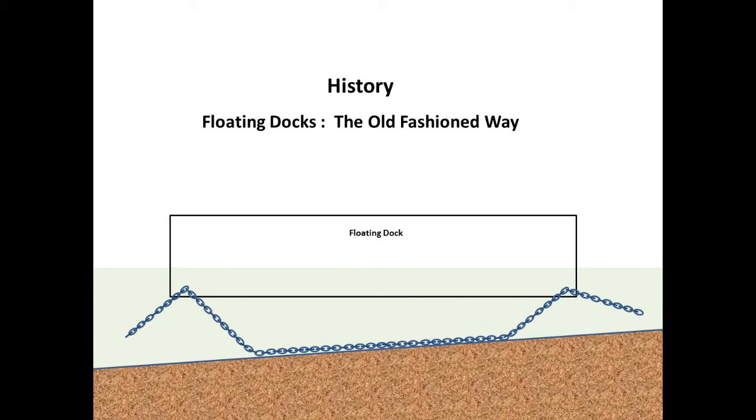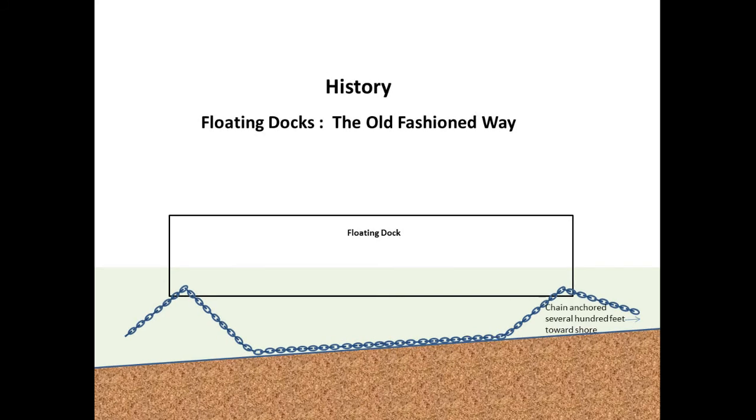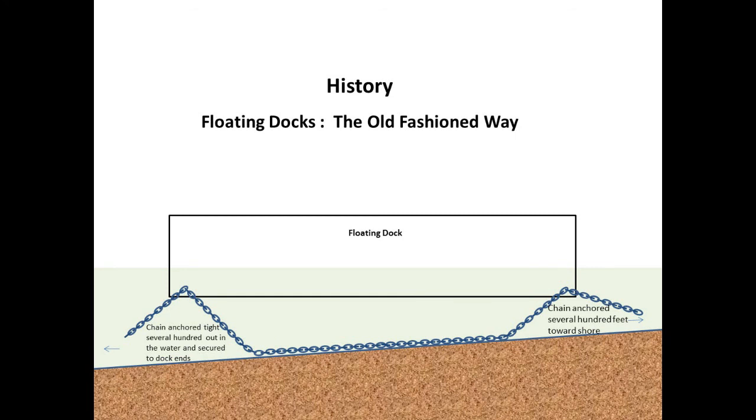Floating docks have typically been secured to a chain several hundred feet long, with one end of the chain anchored on shore and the other end anchored out in the lake. The chain is secured to the bottom of one end of the dock.